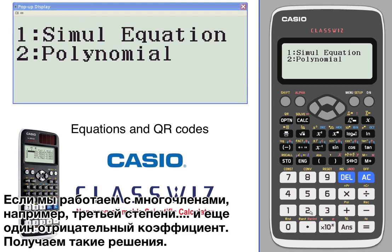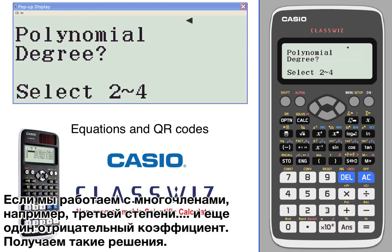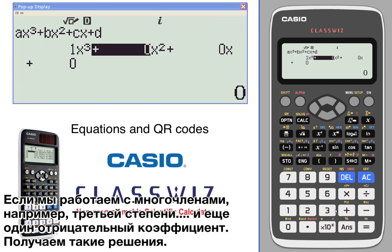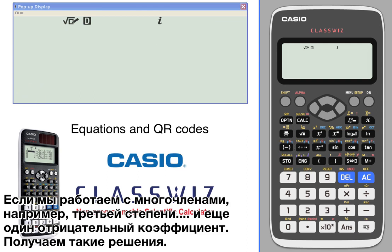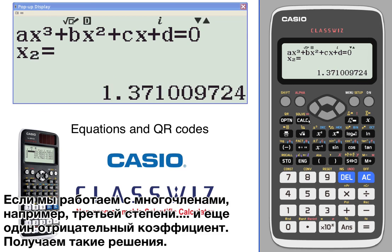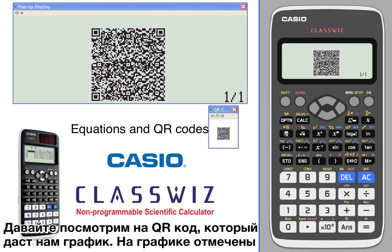If we do polynomials, we'll do a degree three polynomial. And one more negative value here. We get these solutions. Better yet, let's take a look at the QR code.